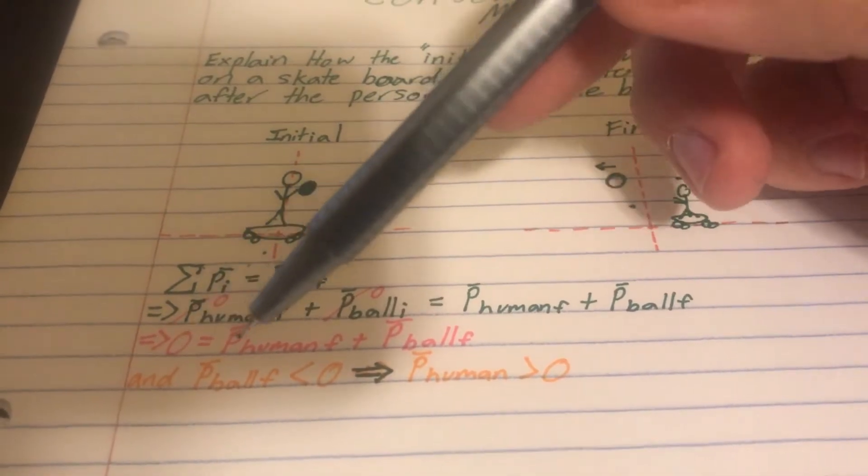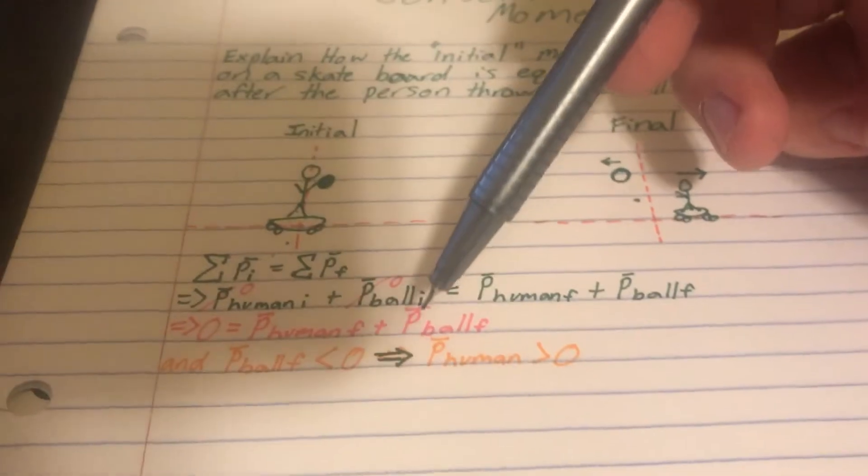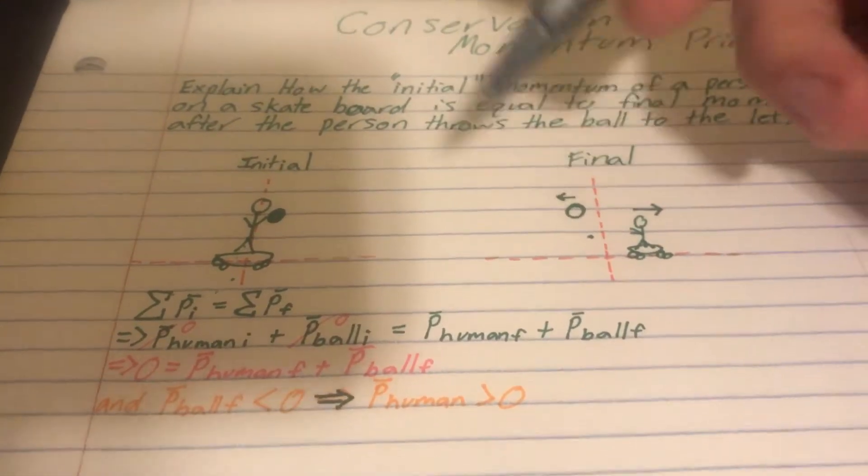That gives me the equation: zero equals momentum of the human final plus the momentum of the ball final. So if he throws the ball to the left,